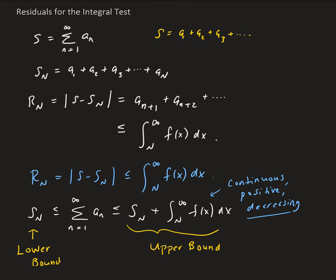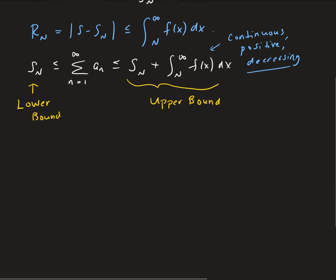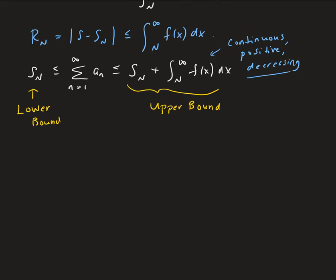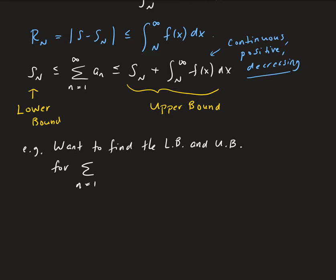Let's look at an example. We want to find the lower bound and upper bound for the series going from n equals 1 to infinity of 1 over n to the 4th. This is a p-series that will converge, and we want to use only six terms.